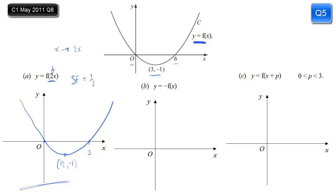Part B: y equals minus f of x. All your y values are changing sign — positives become negative, negatives become positive. That simply means it's a reflection in the x-axis, so we draw exactly the same curve but upside down. The crossing point is still at 6; the maximum point is now (3, 1) instead of the minimum at (3, −1).